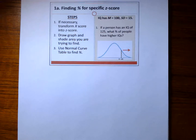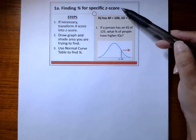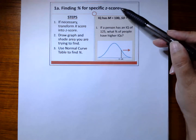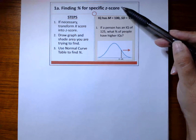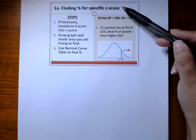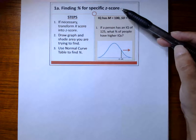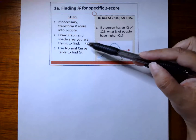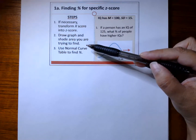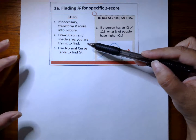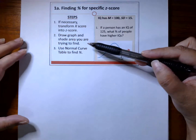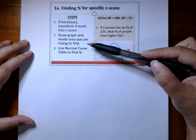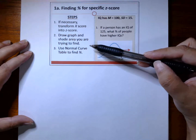There are two different scenarios where you will need to find the percentage under the normal curve. The first scenario is to find the percentage or proportion for a specific z-score — in other words, you are given the z-score and a specific area under the curve to use to find the percentage. These are the three steps to use, so let's get started with our first practice problem.